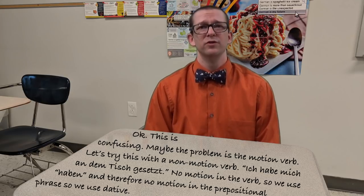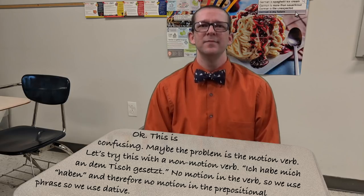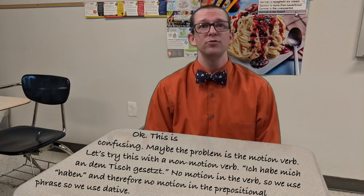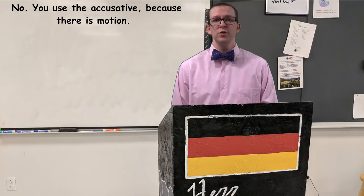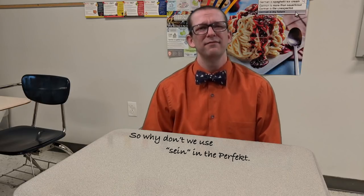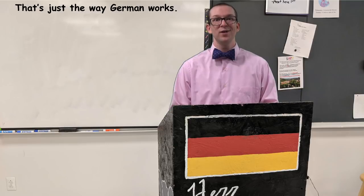Maybe the problem is the motion verb. Let's try this with a non-motion verb. 'Ich habe mich an dem Tisch gesetzt.' No motion in the verb, so we used haben, and therefore no motion in the prepositional phrase, so we used dative. No, you use the accusative, because there is motion. So why don't we use sein in the perfect? That's just the way German works.